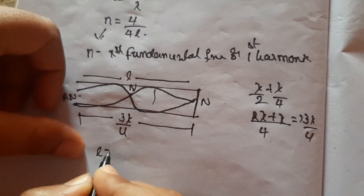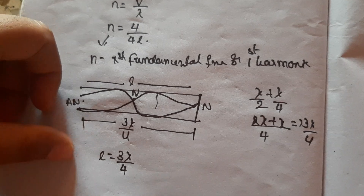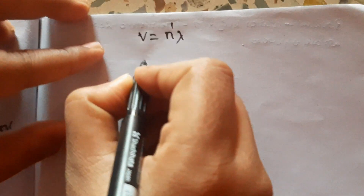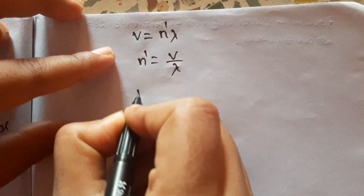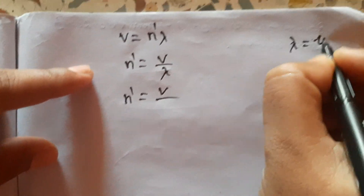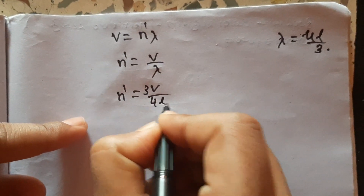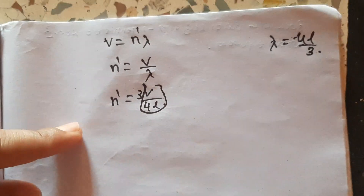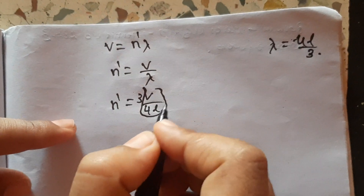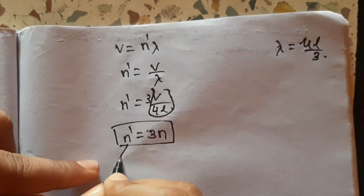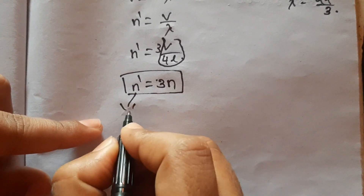So the length L is equal to 3 lambda by 4, which gives lambda equal to 4L by 3. The speed of the wave V is equal to n' times lambda, so n' is equal to V by lambda, which is 3V by 4L. This n' is the second harmonic.